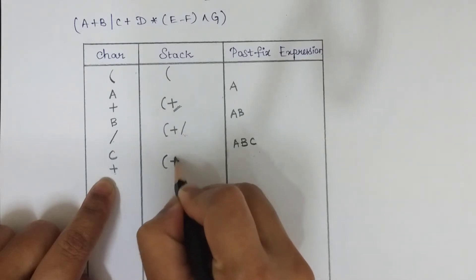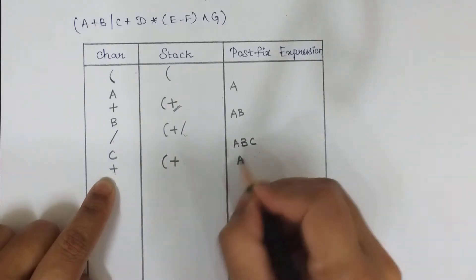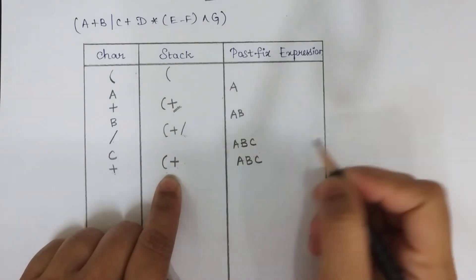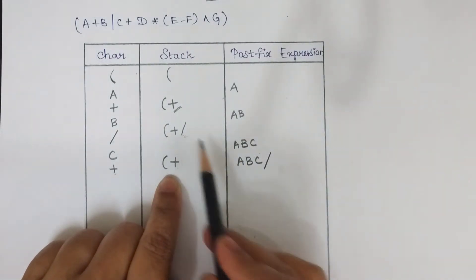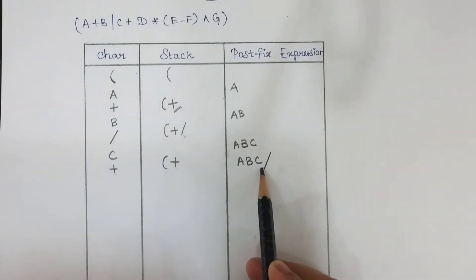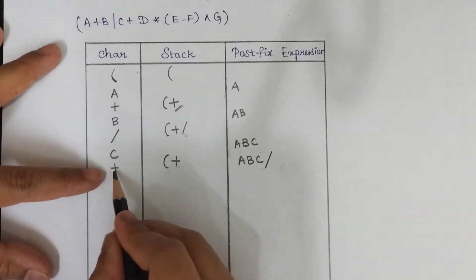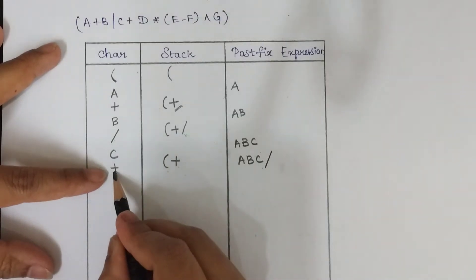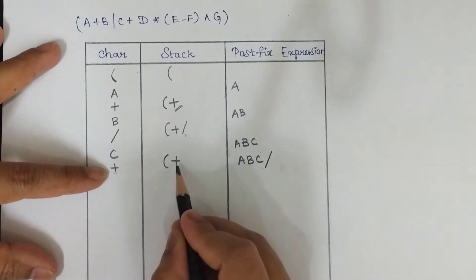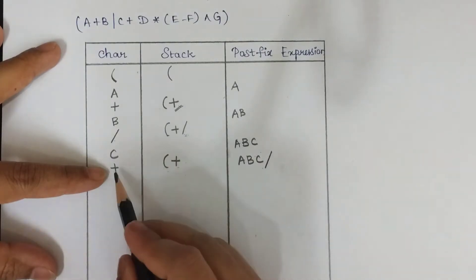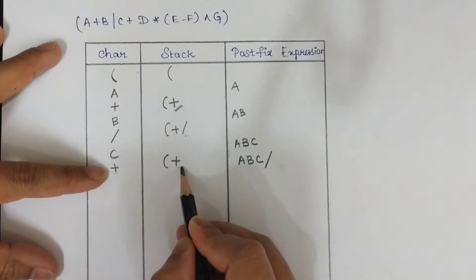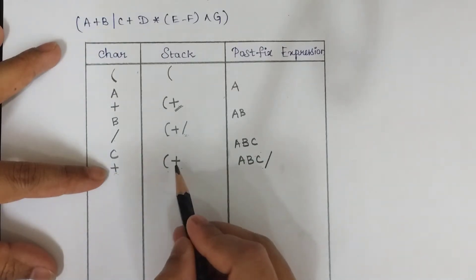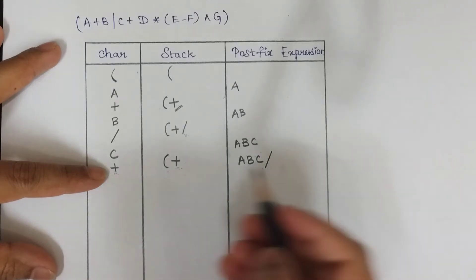After popping division from the stack, we have open parenthesis and plus remaining in the stack. In the postfix expression we now have ABC/. We still haven't pushed the new plus into the stack, so compare it again with the stack top — which is now plus. Plus and plus have equal precedence, and the rule says we need to pop that operator from the stack and append it to the postfix expression.